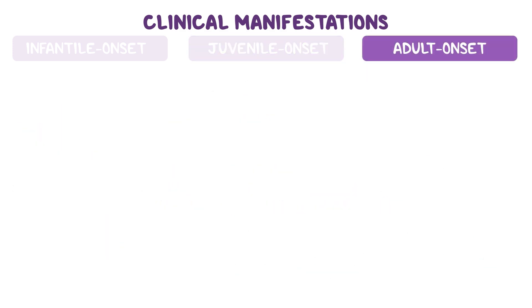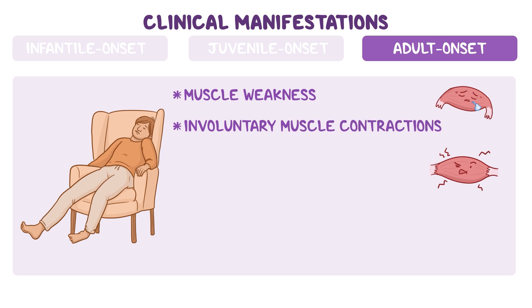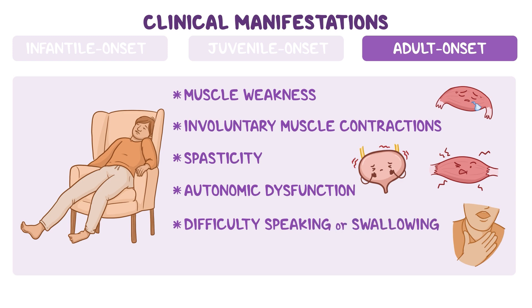Finally, the adult onset form is the least common and most variable. It can lead to muscle weakness, involuntary muscle contractions, spasticity, autonomic dysfunction, and difficulty speaking or swallowing, along with other neurological symptoms.